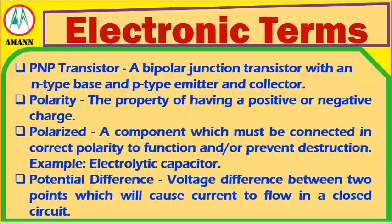PNP Transistor: a bipolar junction transistor with an N-type base and P-type emitter and collector. Polarity: the property of having a positive or negative charge. Polarized: a component which must be connected in correct polarity to function or prevent destruction. Example: electrolytic capacitor. Potential Difference: a voltage difference between two points which will cause current to flow in a closed circuit.